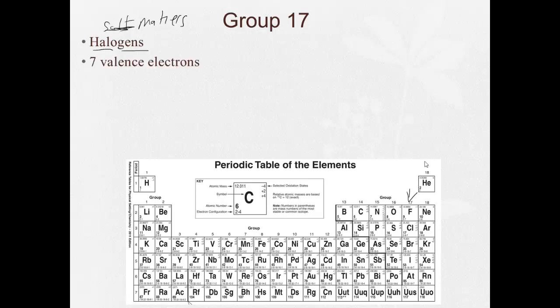They have 7 valence electrons. If you look, the last number in the electron configuration for all of these is going to be 7. And these are the most active, the most reactive of the nonmetals. Now, since they're very close, they only need one electron to have a stable electron configuration.